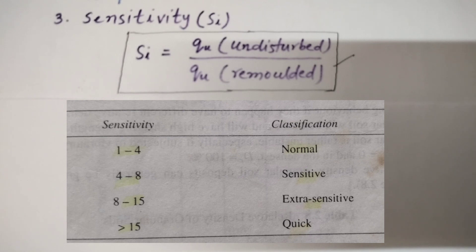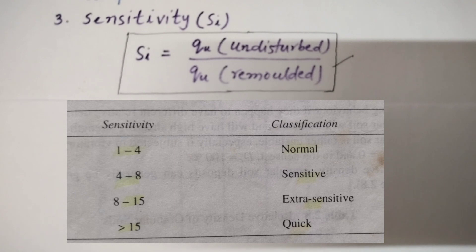If the sensitivity is between 1 to 4, the clay is called normal. If the sensitivity is between 4 to 8, the clay is called sensitive. If the sensitivity is in between 8 to 15, the clay is called extra sensitive. And if the sensitivity is more than 15, the clay is called quick.